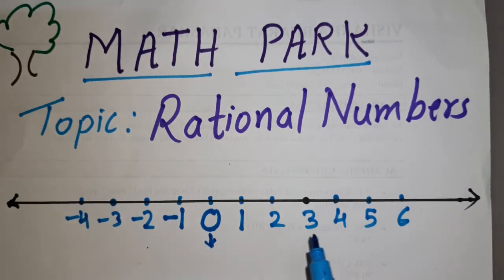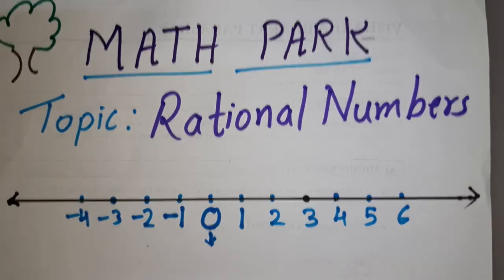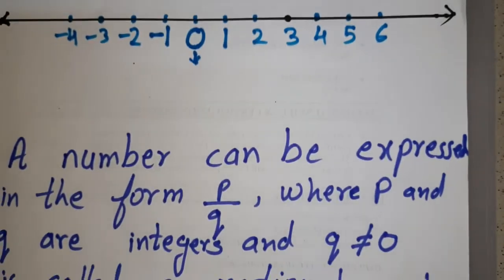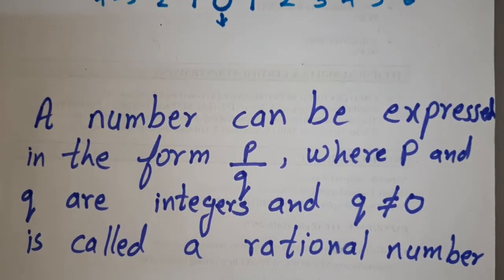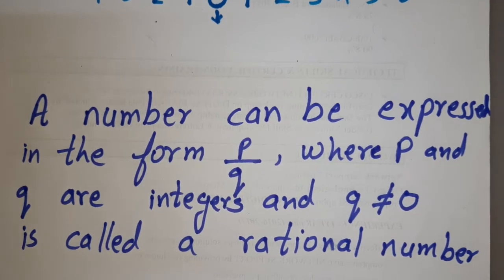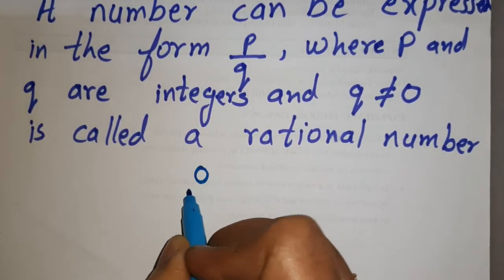We have seen that all integers are rational numbers. So what is a rational number? A number that can be expressed in the form of p by q, where p and q are integers and q is not equal to zero, is called a rational number. Zero is a rational number because I can write zero as zero upon one.